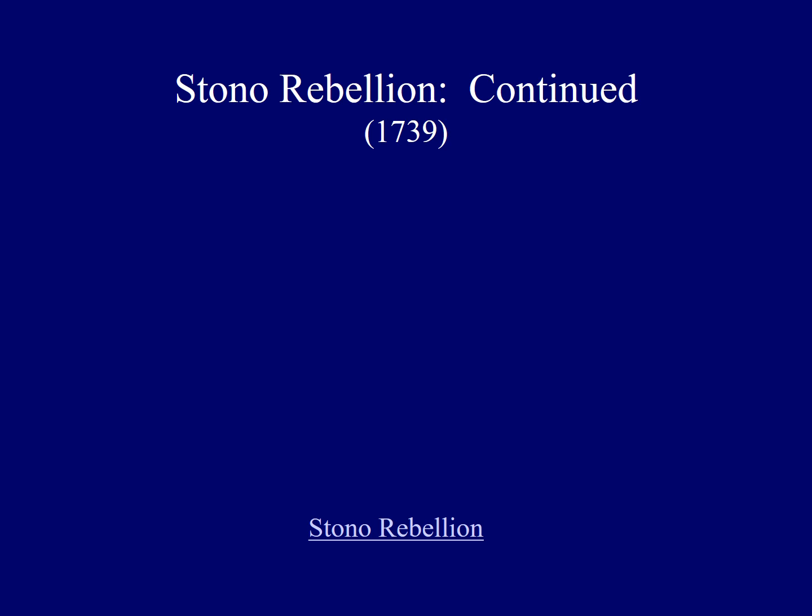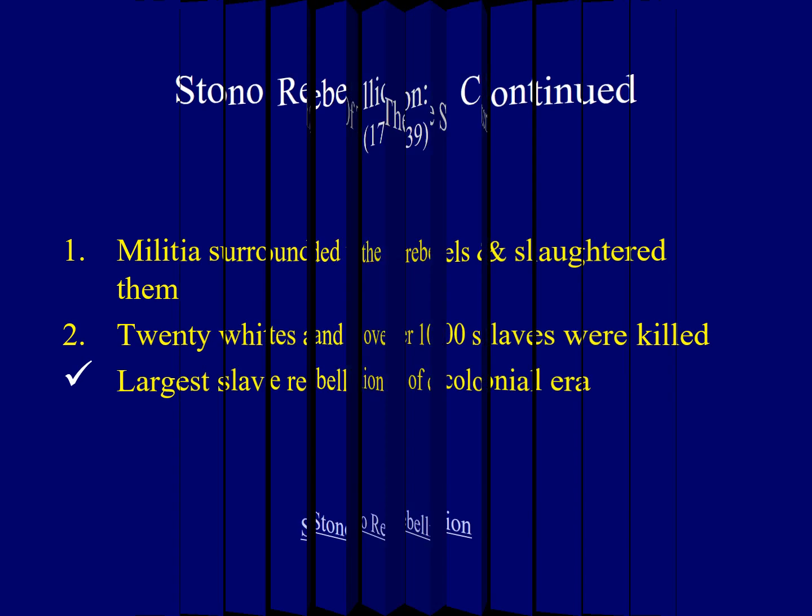Reaction to the Stono Rebellion was swift and significant. In order to prevent another slave rebellion, a new slave code was put into place where slave patrols were expanded so that slaves faced almost constant surveillance. It also fined slave owners who failed to keep their slaves in line. Overall, the legacy of the Stono Rebellion placed tighter restrictions on the behavior of slaves, but also on white slave owners, in order to prevent another such insurrection in the future.